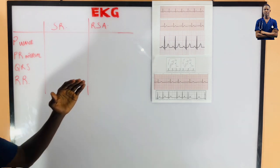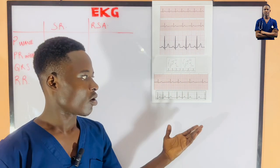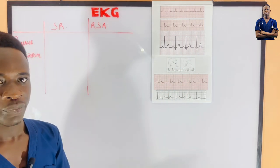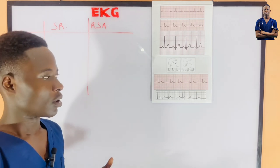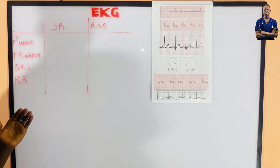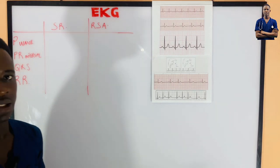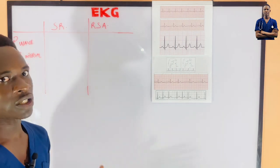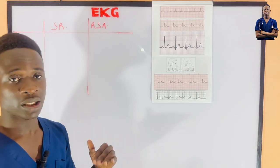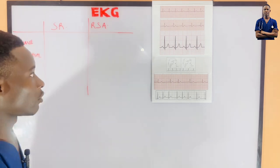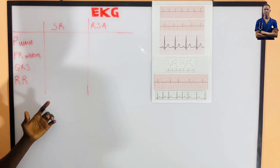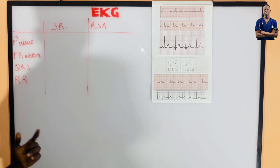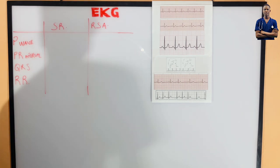Now let's look at how we can identify sinus rhythm on the EKG graph. There are certain parameters that you must take into consideration when checking for sinus rhythm on the EKG. Those parameters are: the P wave, the PR interval, the QRS complex, and the RR interval.